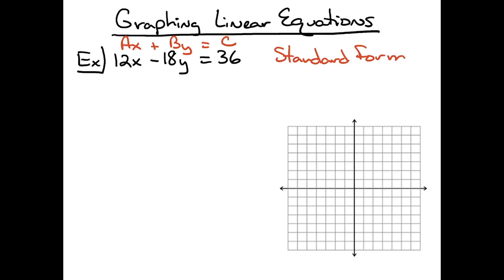In standard form, it always looks like ax plus by equals c. So you can identify your coefficients: a being 12, b being negative 18, and the constant there on the end, 36 being c.